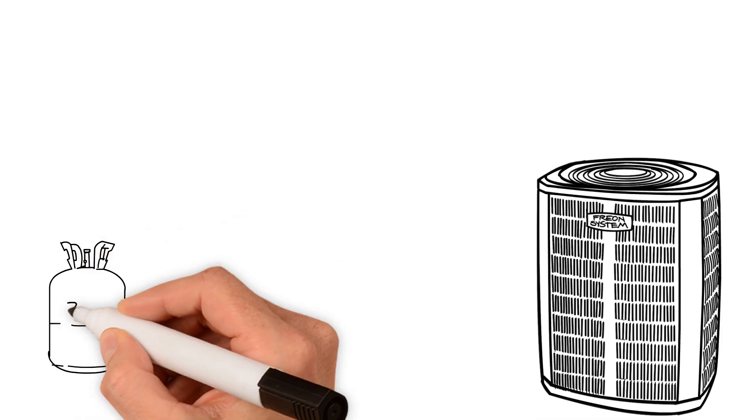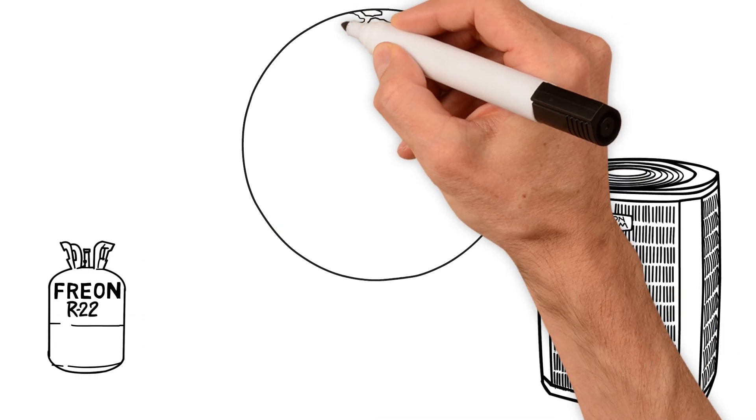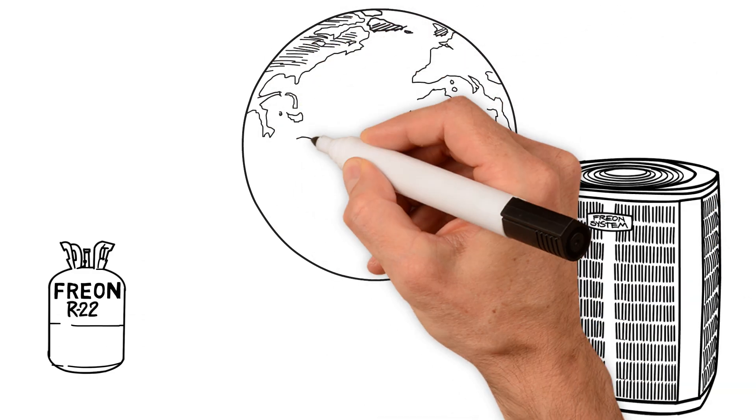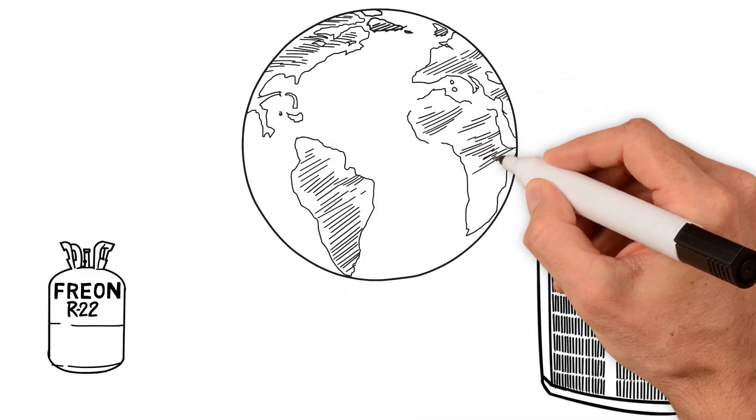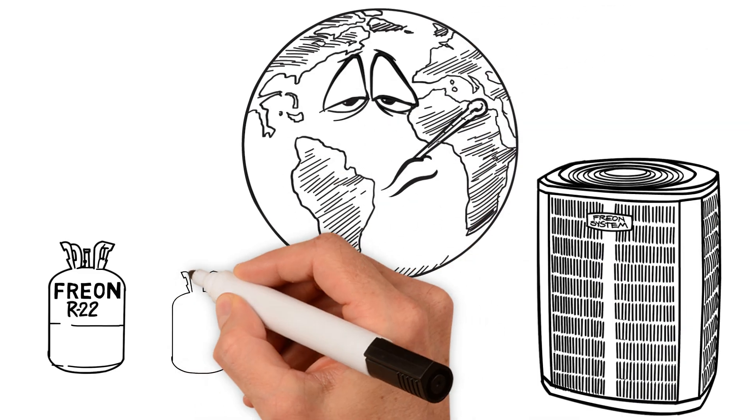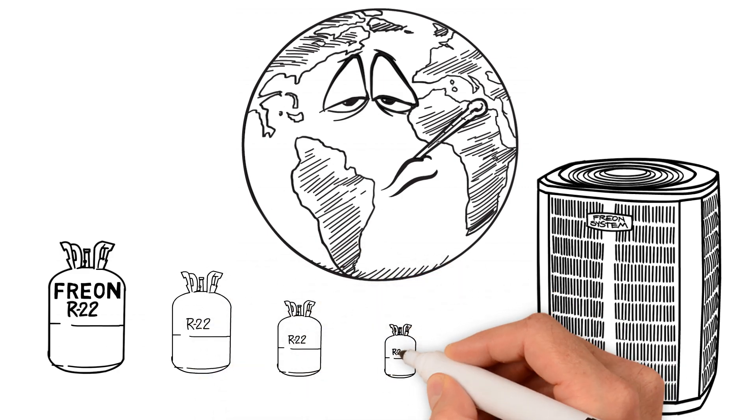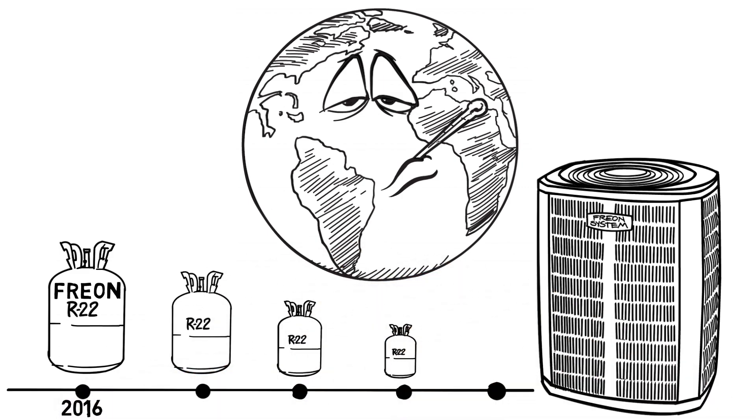First, let's talk about Freon, also known as R22. Many home air conditioning units, also called HVAC units, that were built before 2010 run on a refrigerant called Freon. The federal government wants to discontinue use of Freon because of its ozone-depleting properties. In order to get rid of it for good, the government has mandated that Freon production be reduced over time until year 2020, when it will no longer be available.